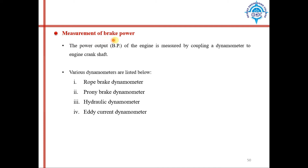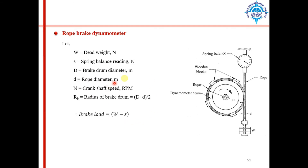To measure brake power, dynamometers are used. One type is the rope brake dynamometer. In this apparatus, the hatched section represents the crankshaft, on which a drum called the dynamometer drum is mounted. A rope is wound around the periphery of the drum, with one end attached to a dead weight W and the other end attached to a wall through a spring balance.